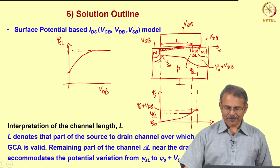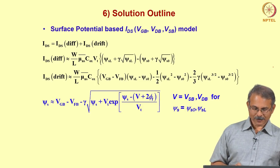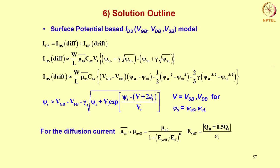What about the average mobility? We are using this average mobility expression. For the diffusion current, the average surface mobility for electrons is approximately equal to μn effective, given by μn0 / (1 + |Ey effective / E0|)^n. You see that here there is no longitudinal field effect to consider — we only need to consider the vertical field. Because we are in the diffusion regime, across the channel the voltage does not fall much.